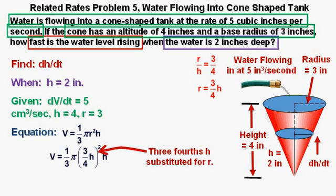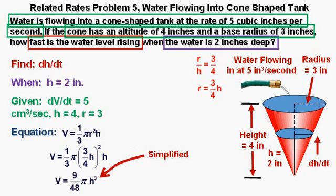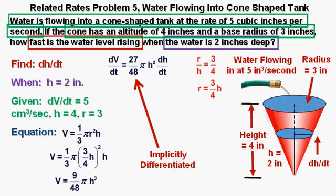Here's the equation with 3/4 h substituted for r. Simplified, we get V = 9/48 πh³. And differentiated implicitly, we get dV/dt = 27/48 πh² dh/dt.